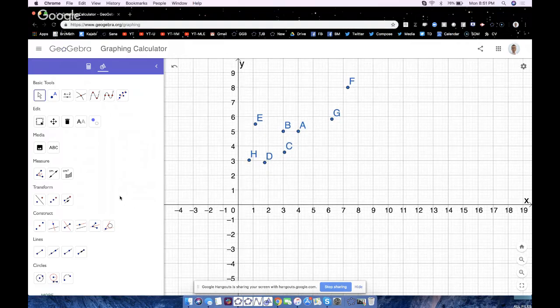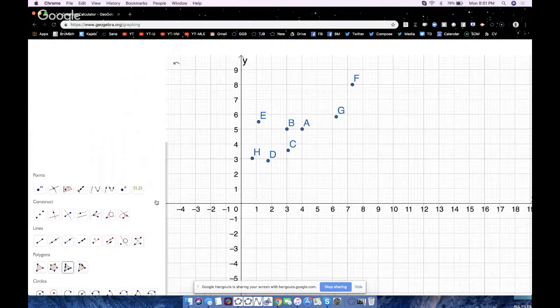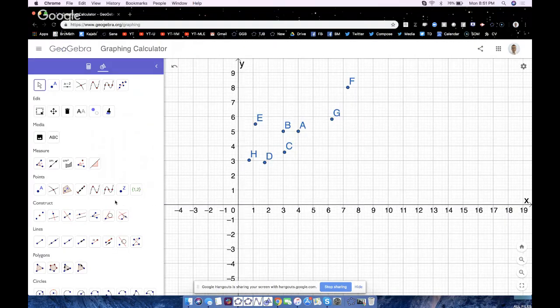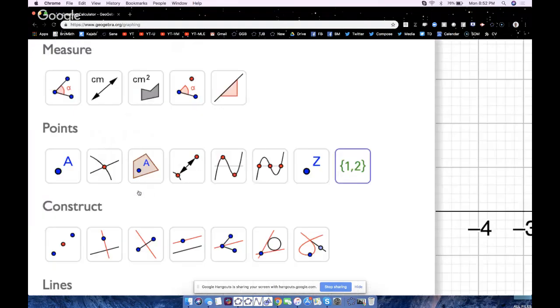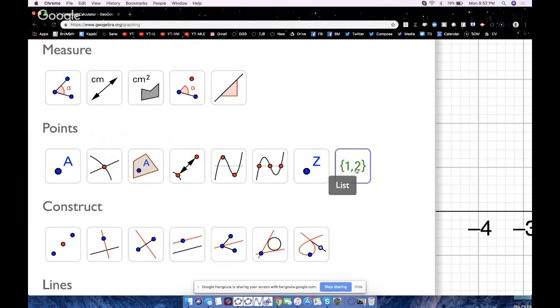Now, the way to do any type of regression in GeoGebra is very simple. You have a bunch of tools here. Go hit the icon that says more, and more will show up. And I love how they're categorized. One of my favorite tools in all of GeoGebra here is the list tool.